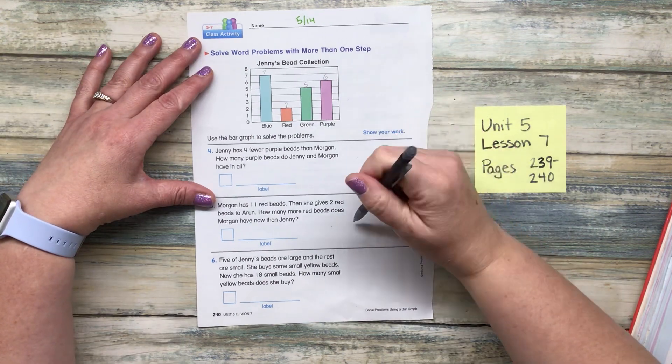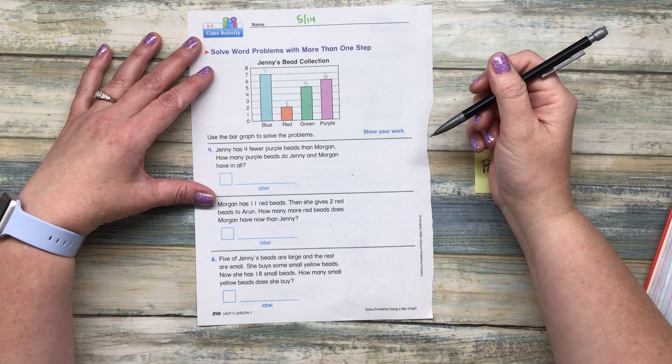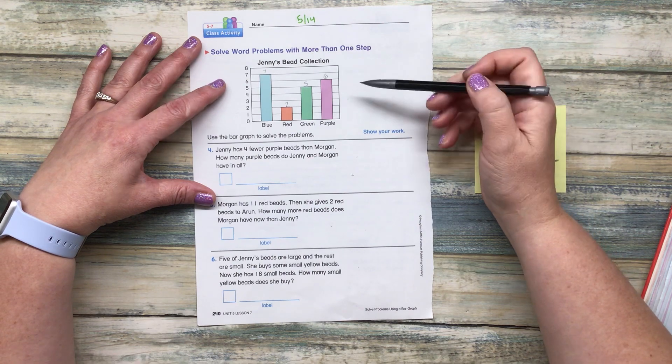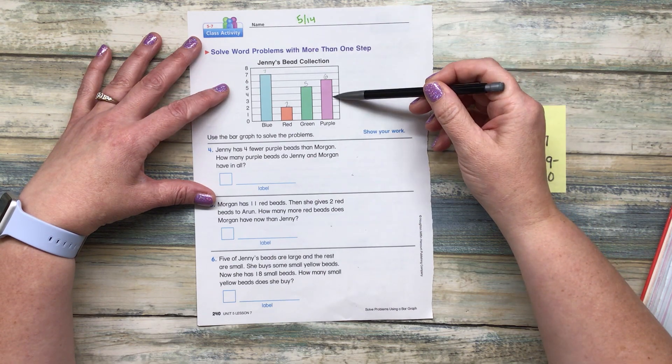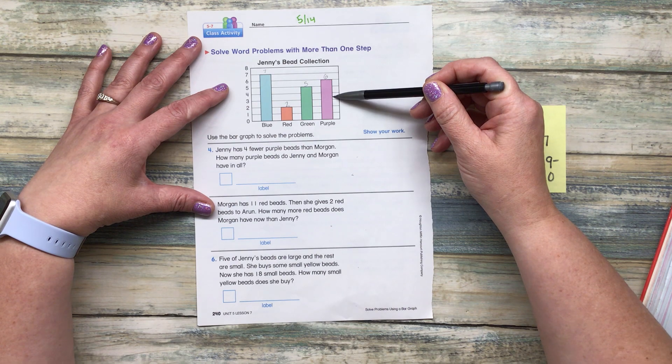Okay. Next up. We do, I do, you do, you do. Jenny has four fewer purple beads than Morgan. How many purple beads do Jenny and Morgan have in all?